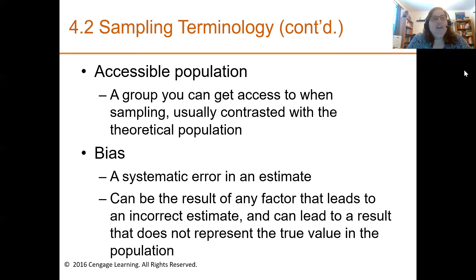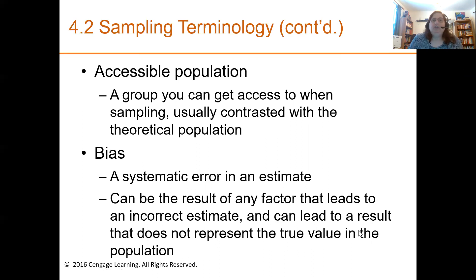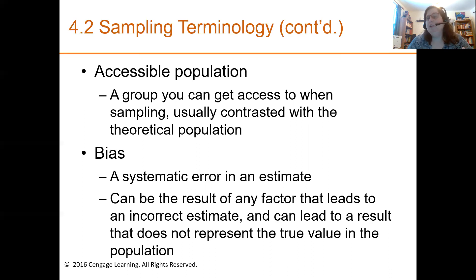The accessible population is that group you can get access to when sampling, usually contrasted with the theoretical population. Bias is a systematic error in an estimate — it can be the result of any factor that leads to an incorrect estimate and can lead to a result that does not represent the true value in the population. Bias doesn't have to be intentional; it could just occur because luck wasn't kind, and even though you drew a sample using all the respected methods, you still got a biased sample, off to the side rather than from the center of the normal curve.